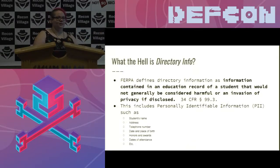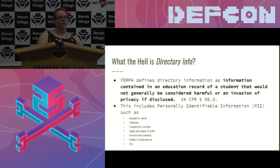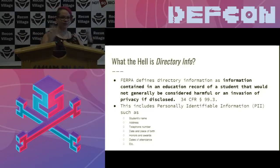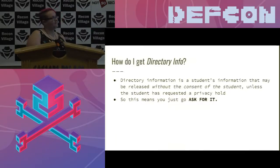The PII that can be disclosed without telling you includes your name, address, telephone number, date and place of birth, honors and awards, dates of attendance, height and weight, sometimes parents' names, international students' addresses and their parents' names and international contacts. Some schools even have student ID photos you can pull very high-quality JPEGs from to make your own ID — everything but your grades. In many cases the colleges also consider your college email address protected, but everything else is fair game, released without consent unless a student has requested a privacy hold.